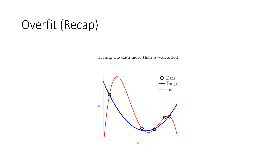Overfitting — this is from the previous lecture. Fitting more than what is warranted is what overfitting is. As you can see, this data had a little bit of noise, and the target function was relatively simpler, but we fitted a very complex model and it went astray with just five data points because there was noise in the data. We really overfitted each and every point, and you can see that this is really bad for generalization.